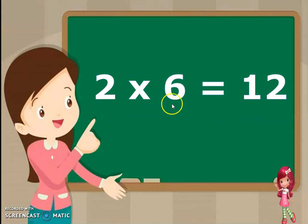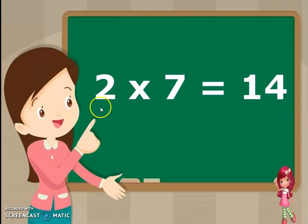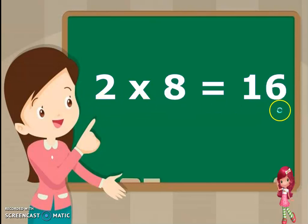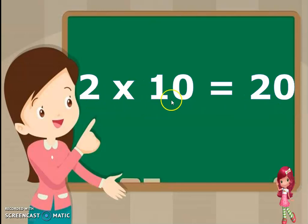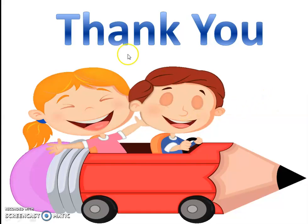2 6s are 12, 2 7s are 14, 2 8s are 16, 2 9s are 18, 2 10s are 20.